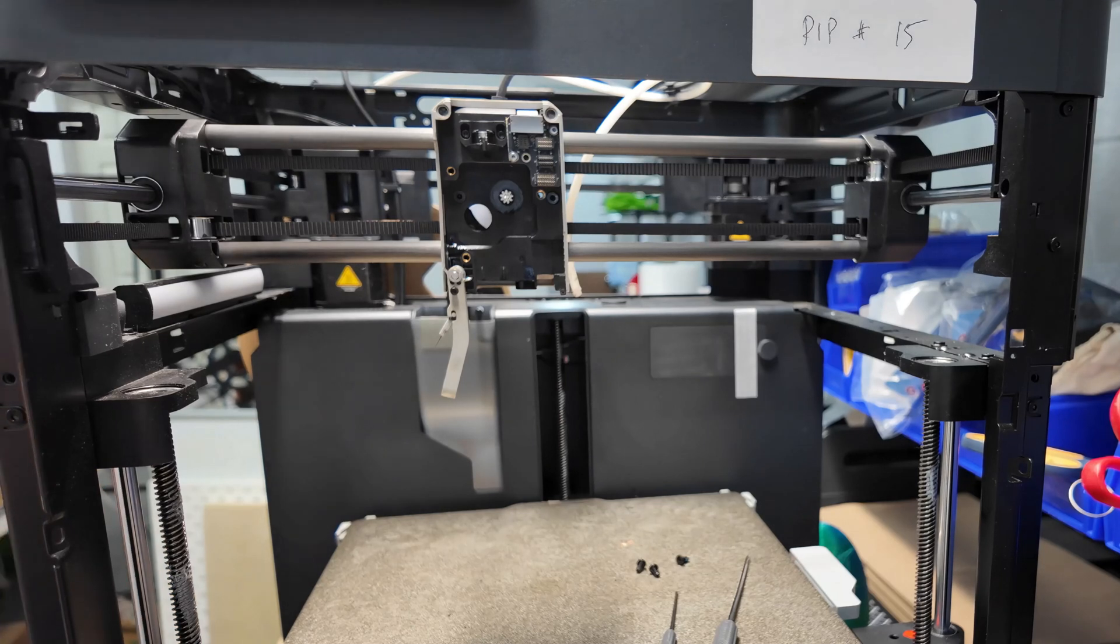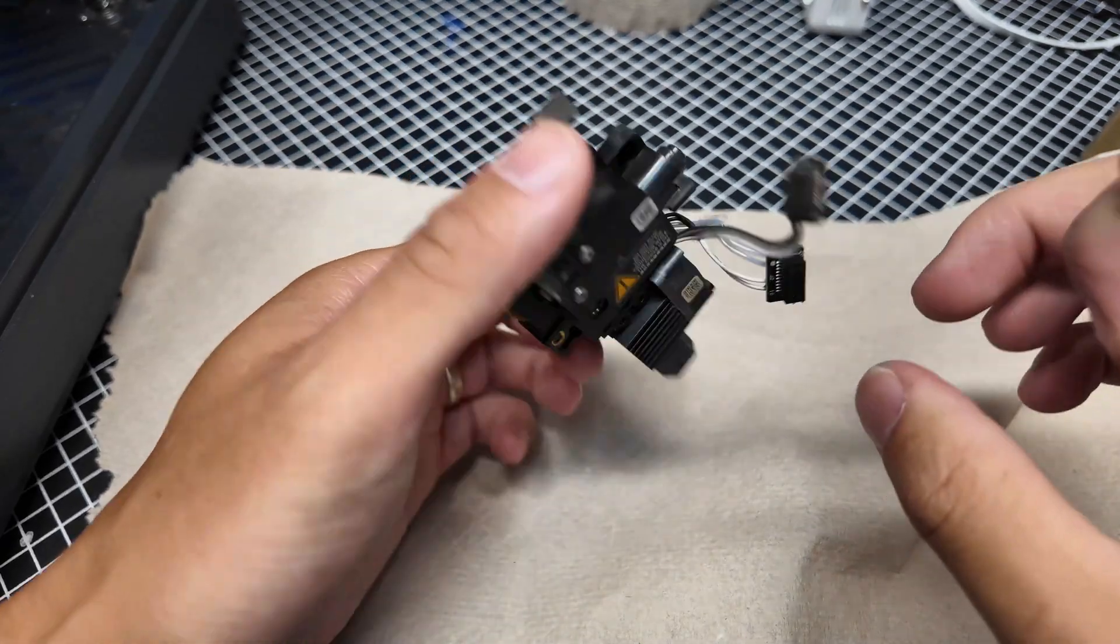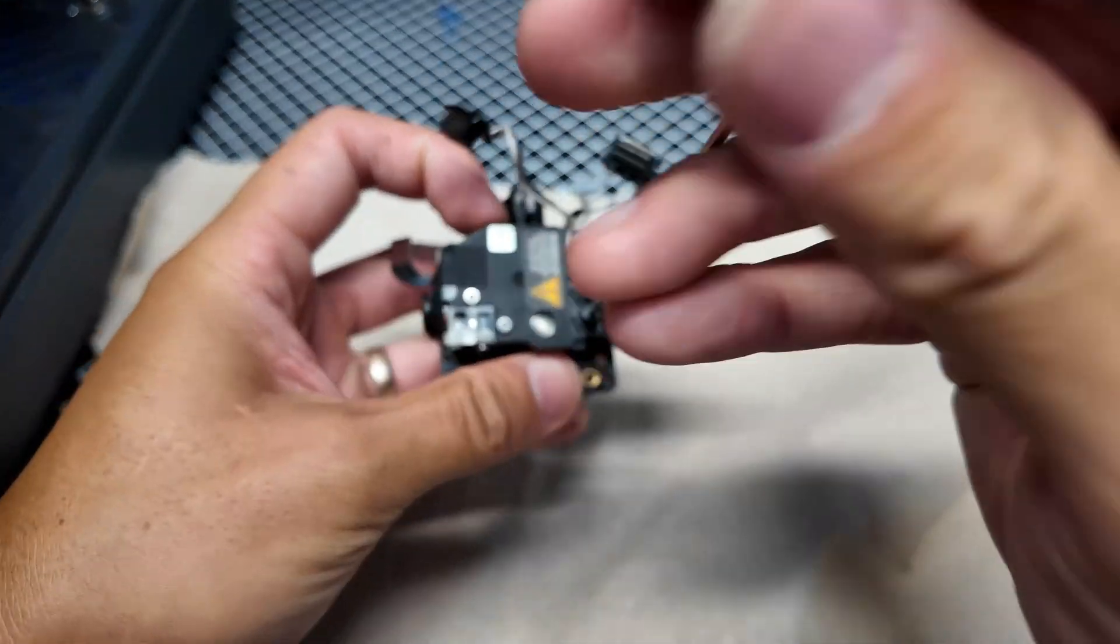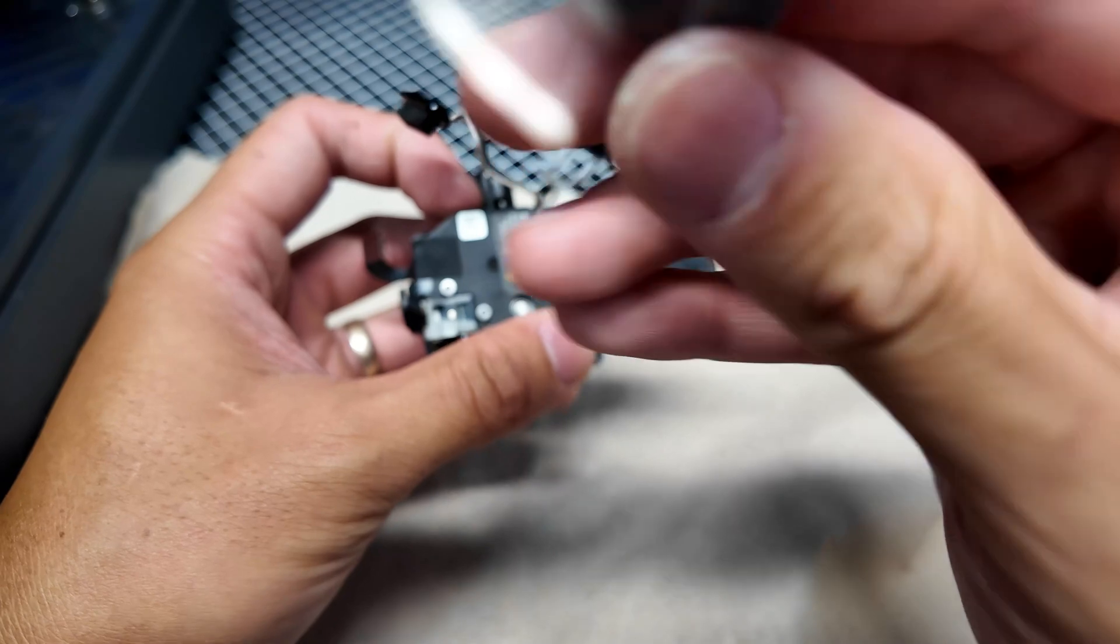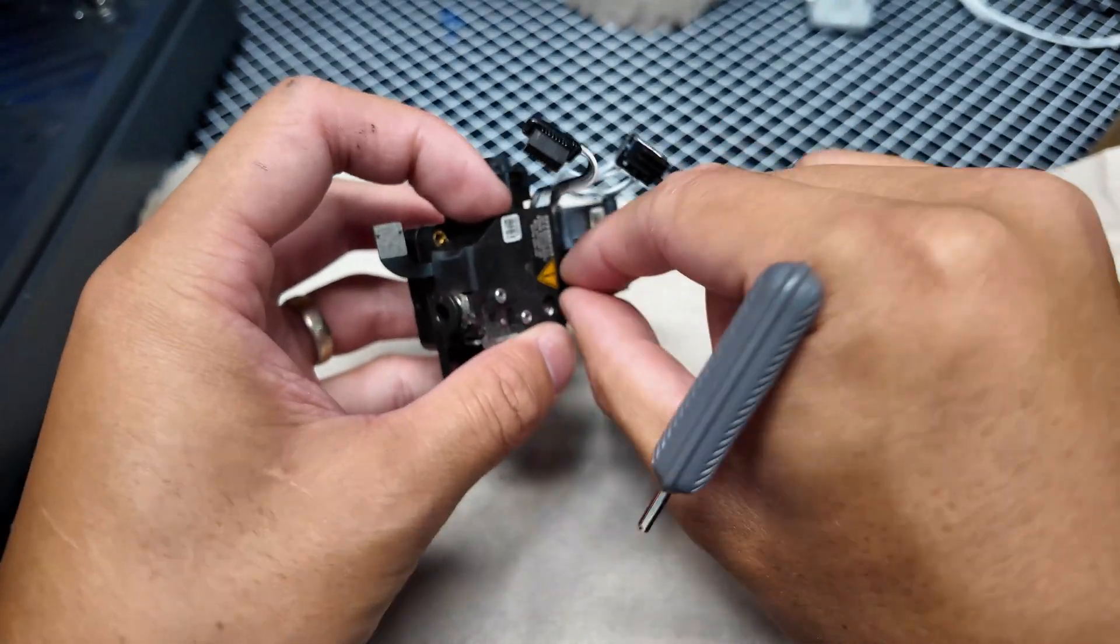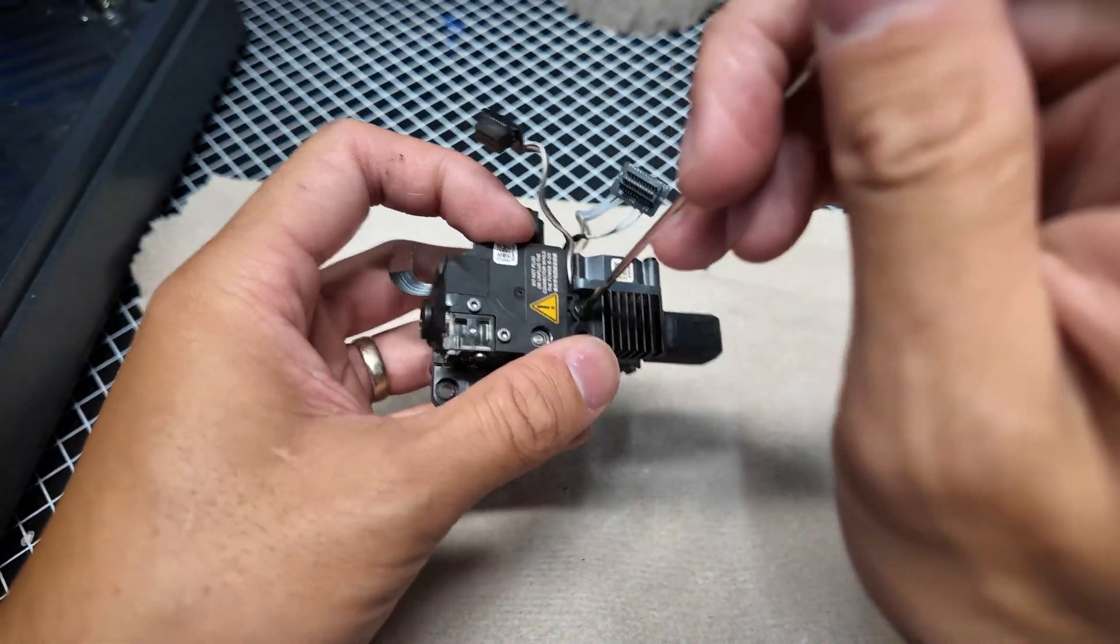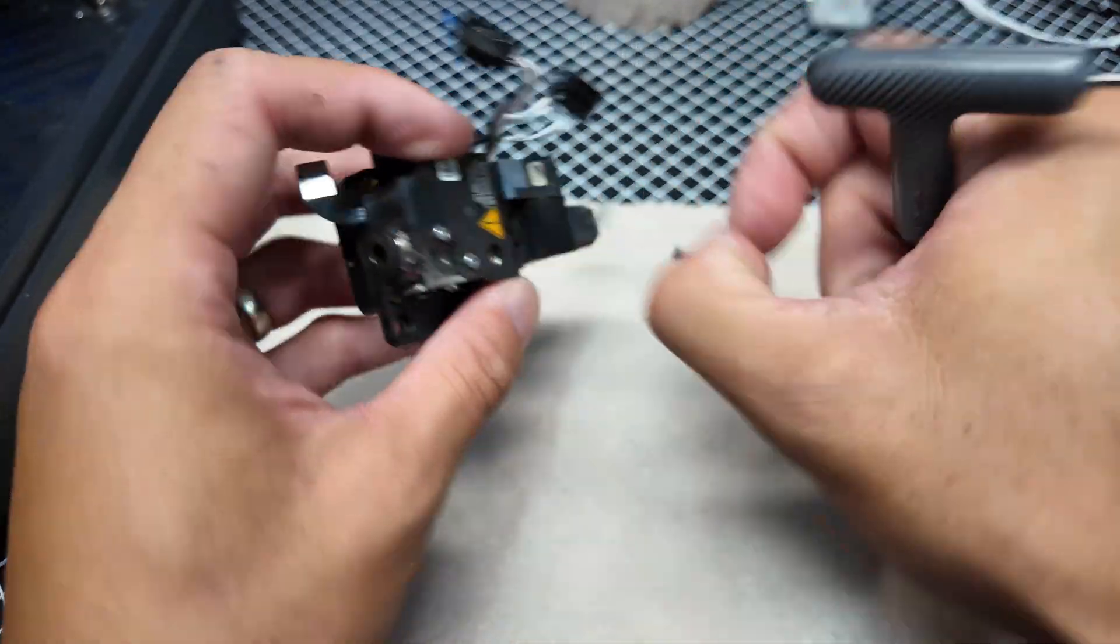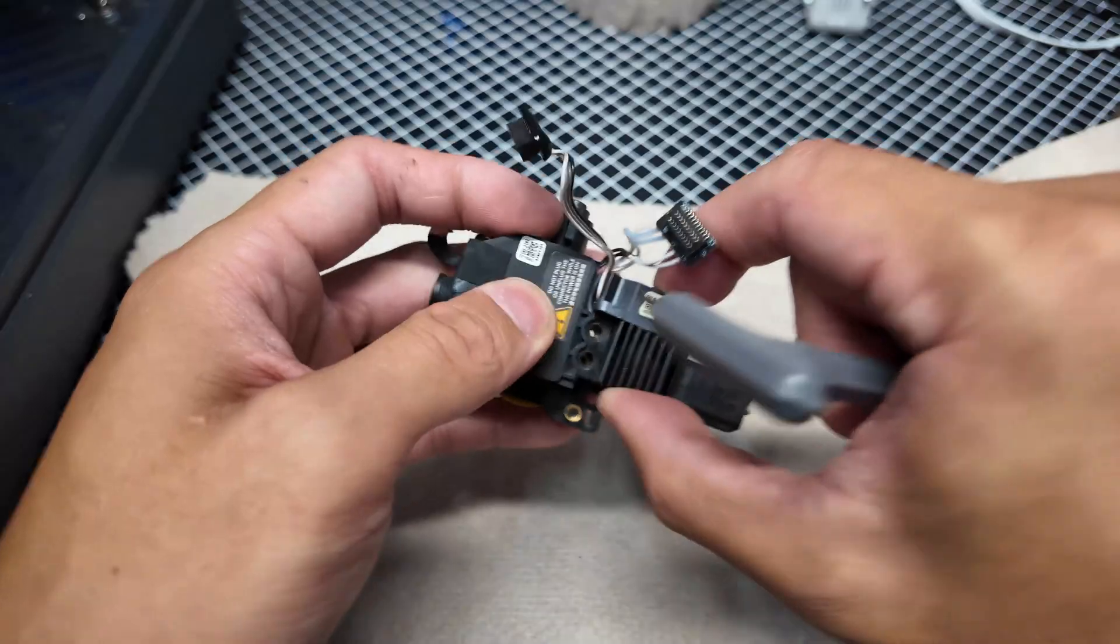So the next part is we're going to just take apart this extruder. You could have taken off the nozzle before taking out the extruder. I kind of did it backwards, but it doesn't really matter. You could just take this apart now. Like I said, I'm fairly confident the issue with this printer lies in the extruder gears. So we'll see.